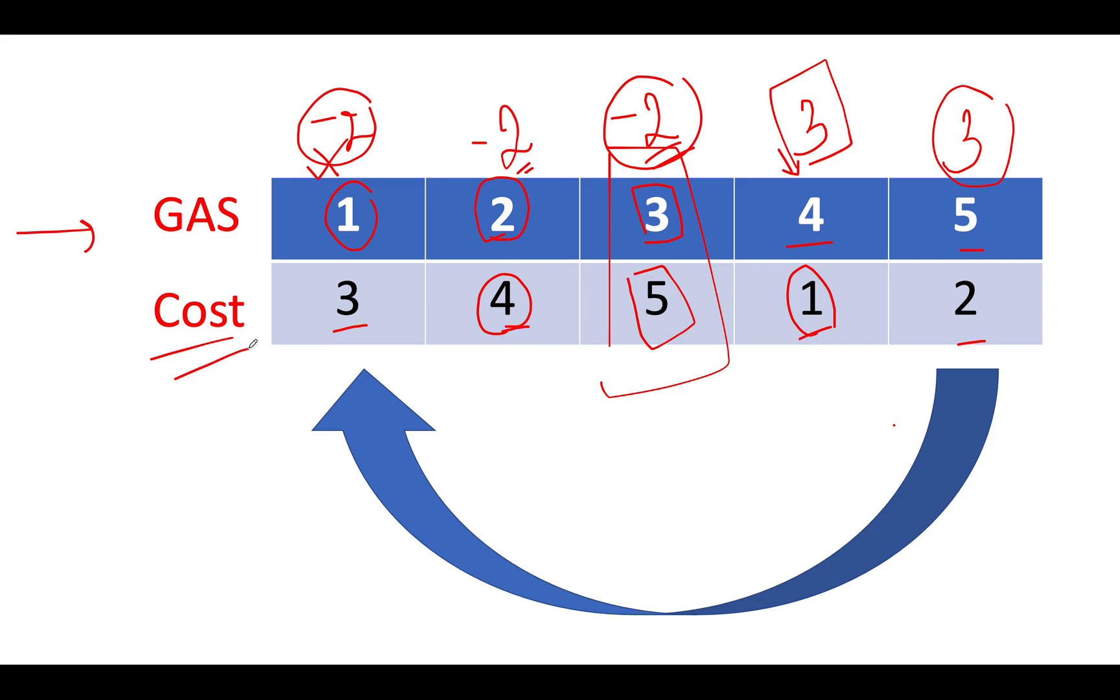We will add up all the gas values that we have. We'll sum those up. So 1 plus 2 gives me 3, 3 plus 3 gives me 6, 6 plus 4 gives me 10, 10 plus 5 gives me 15. And similarly what we will do? We'll sum up all the cost. So 3 plus 4 is 7, 7 plus 5 is 12, 12 plus 1 is 13, 13 plus 2 is 15.